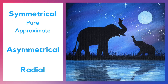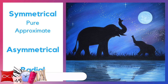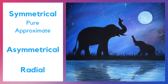An even greater sense of balance is achieved because of the moon. The moon was placed on the right side where the smaller elephant is located, adding more visual weight to the right side and helping this piece become more balanced.